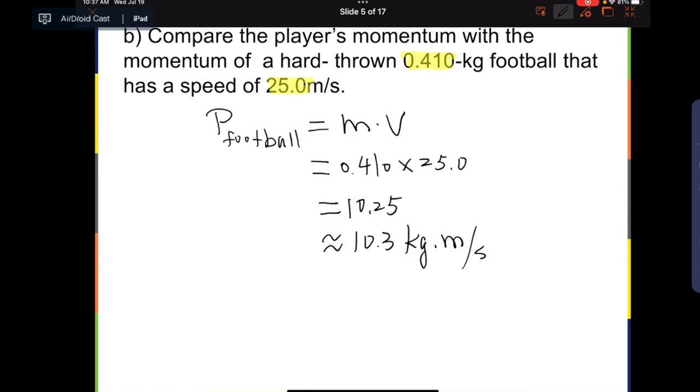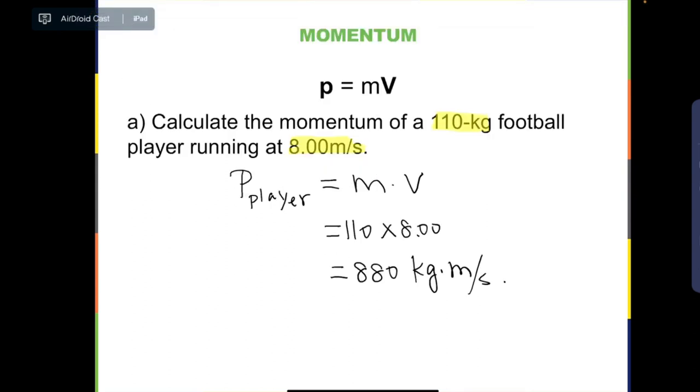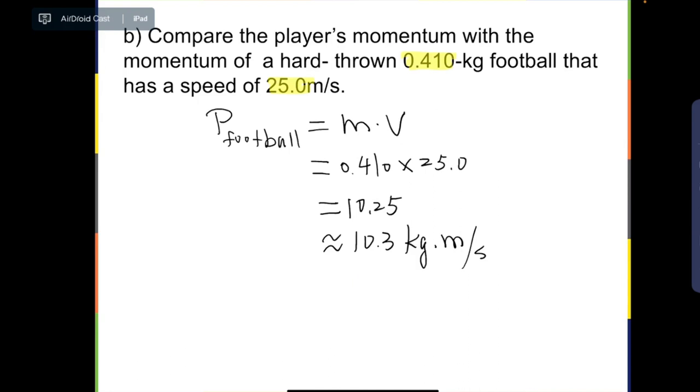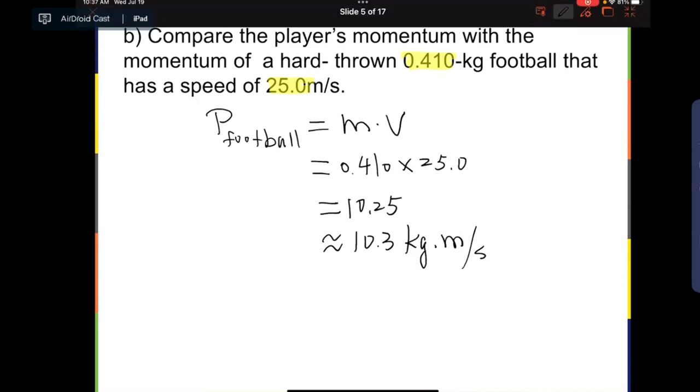So clearly, if you compare this number with the earlier momentum, you will find that the player has much more momentum than the football. And therefore, we can say p player is greater than p football.